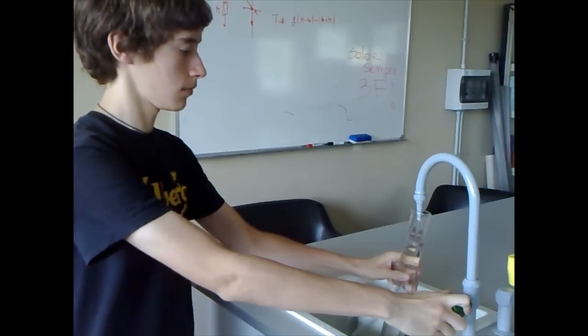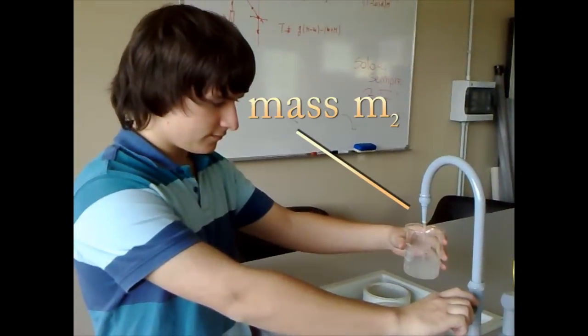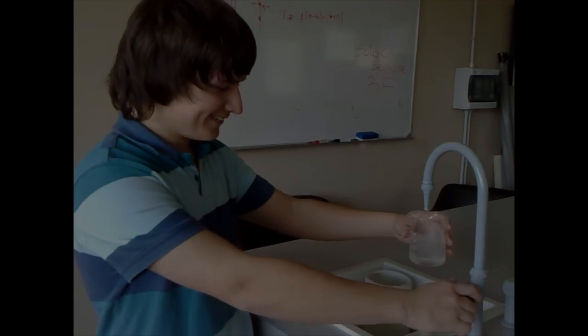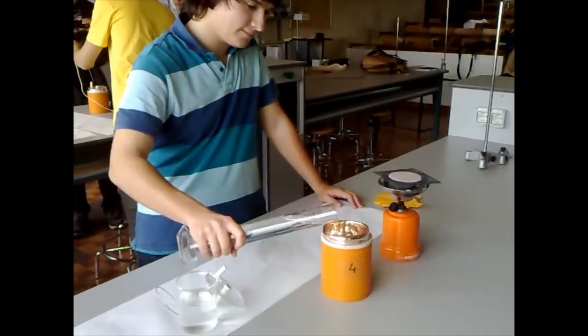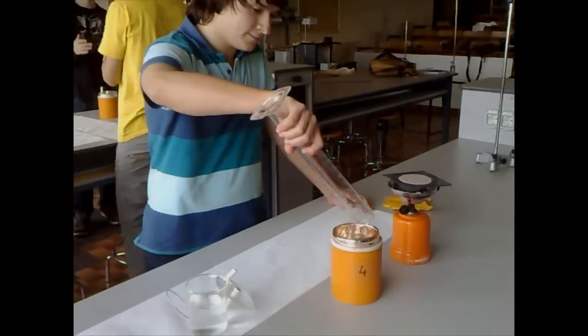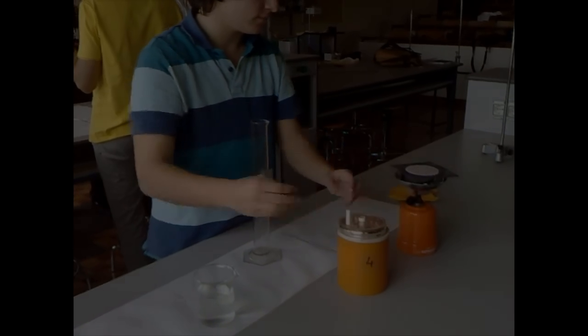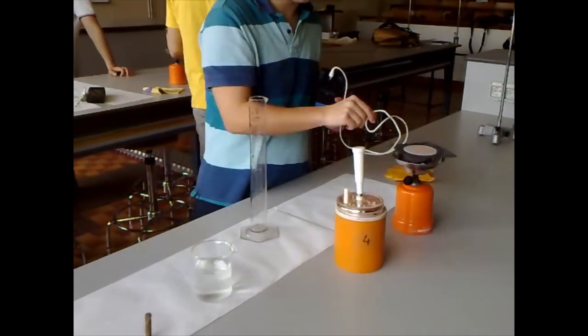Matteo fills a graduated cylinder with water and Yuri repeats the same operation with a beaker. He pours the water into the calorimeter and closes it with the lid and with the digital thermometer. He measures the equilibrium temperature reached.